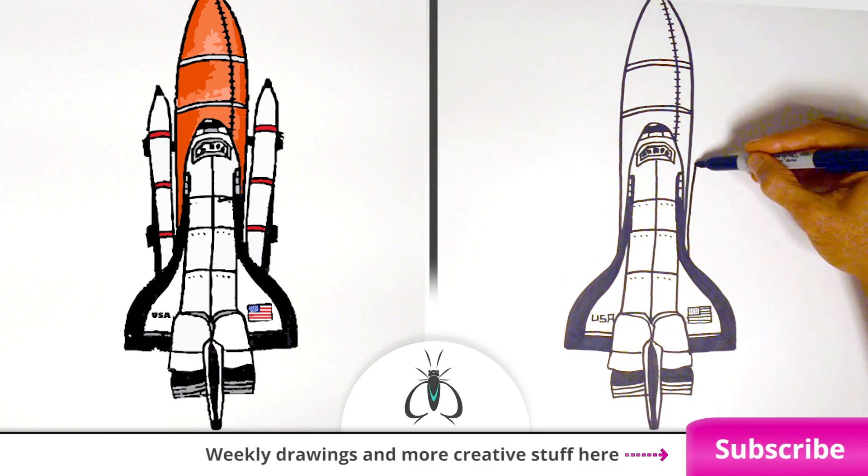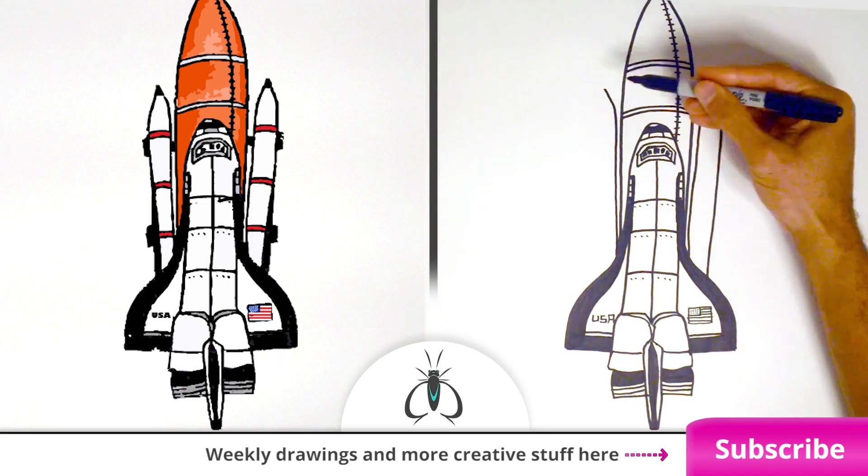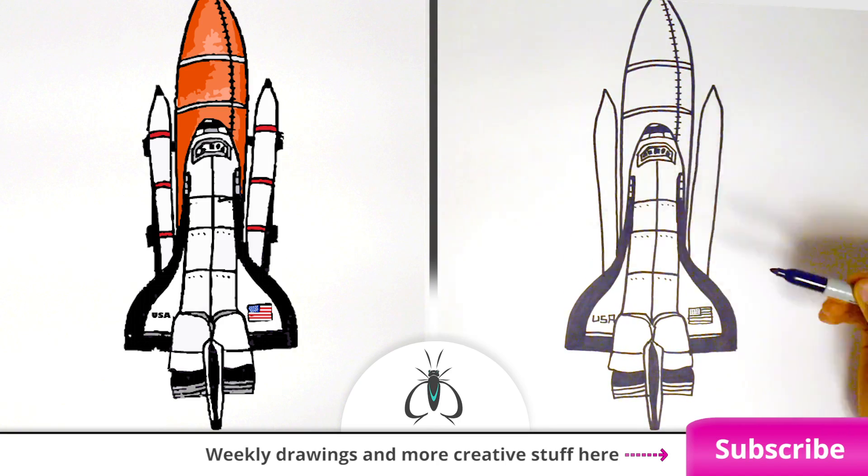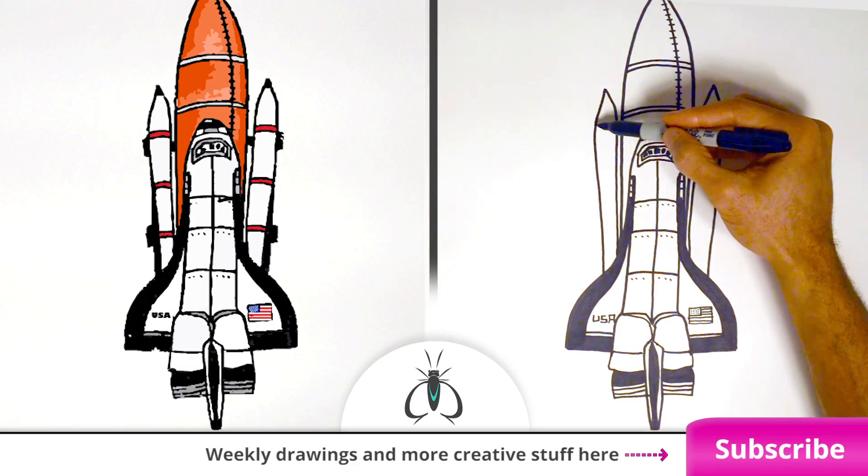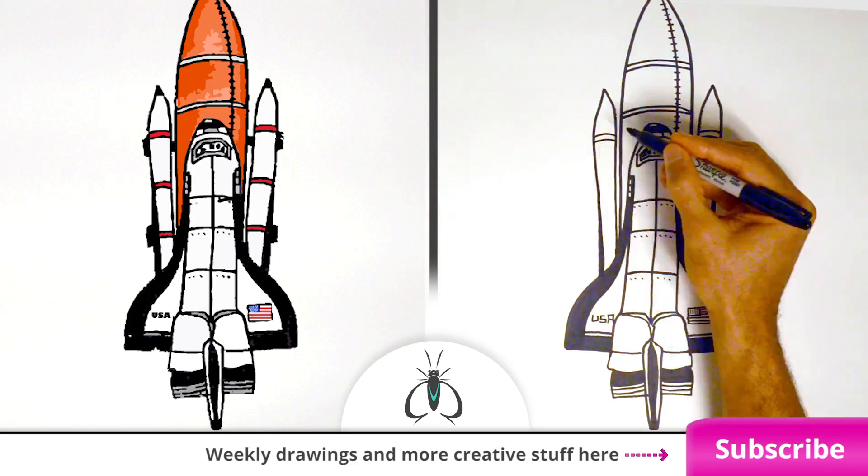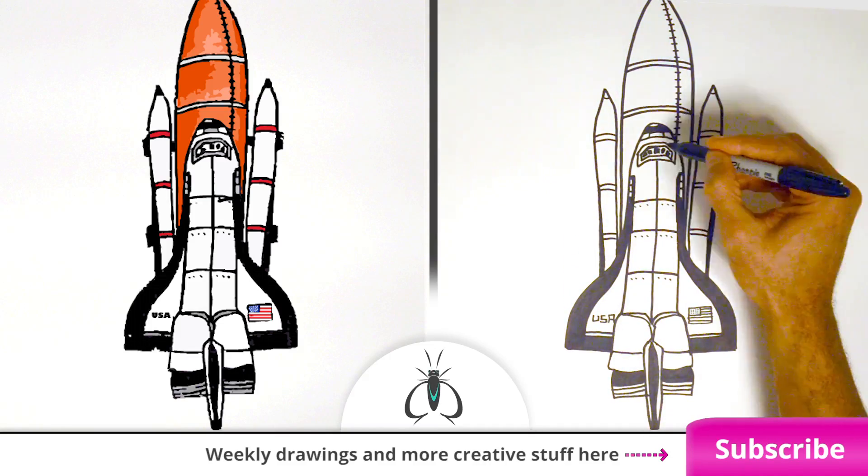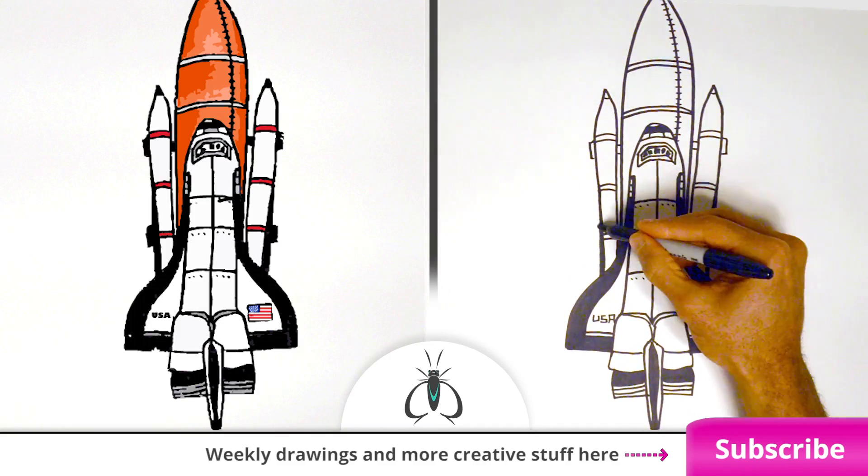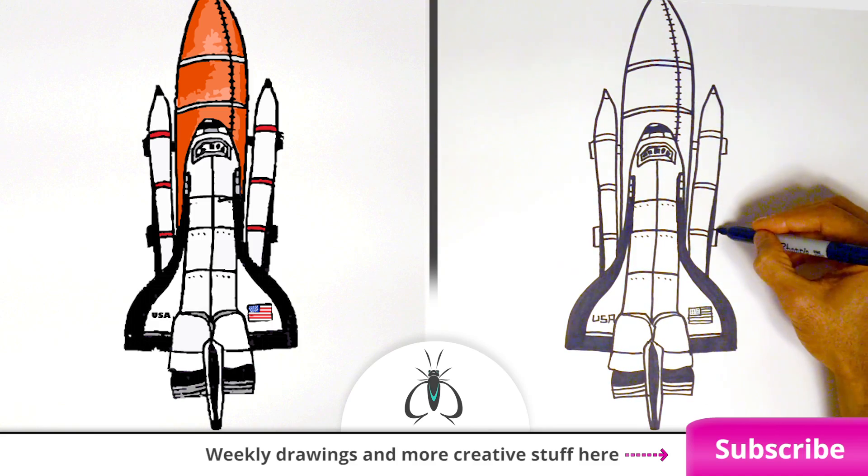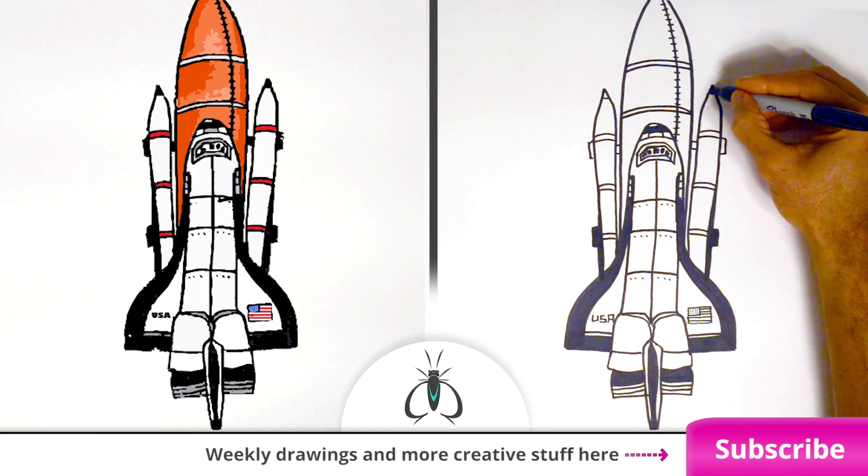And attached to the external tank are two solid rocket boosters. One and two. Now these look smaller, but they're what really provide the thrust during launch. You can make your rocket boosters however you'd like. And they're attached just like that.